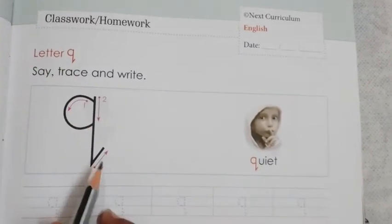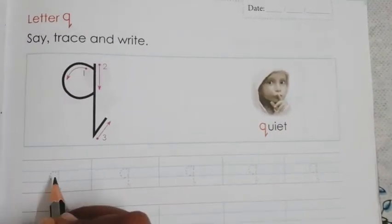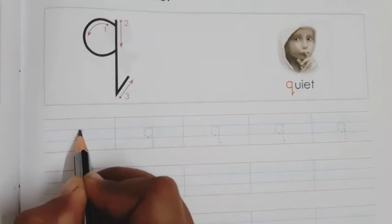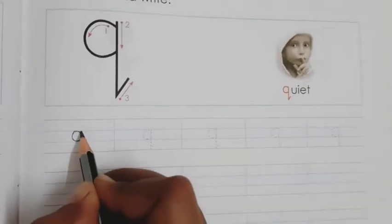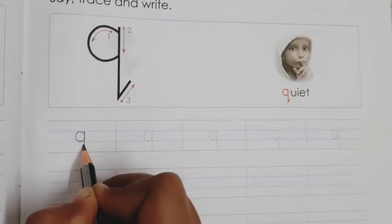Q, qua, quiet. So we have to make one right open curve from blue line to blue line only, in this way. Then make one standing line from blue line to red line, then go up in a slant way. It's a small letter q like this.